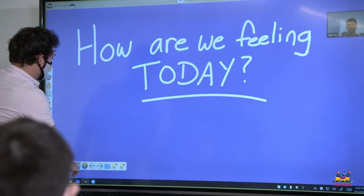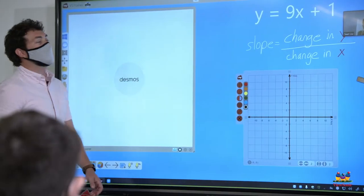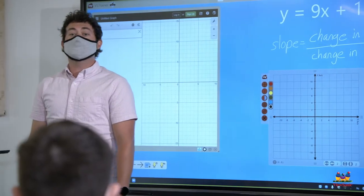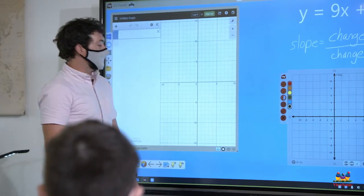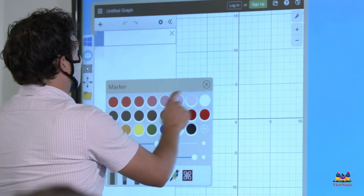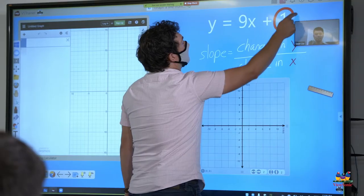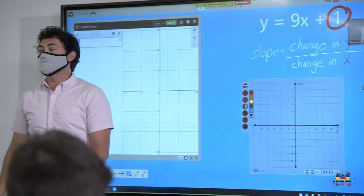Here we go. Today, boys and girls, we are going to be learning about how to graph using slope-intercept form. So let me show you how to do this first. Remember, the formula is y equals mx plus b.